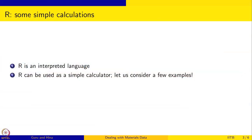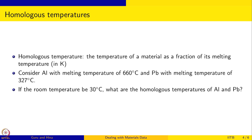R is an interpreted language, so you can use it exactly like a calculator — you type in some computation and you will immediately get the answer. Here are a couple of examples. Homologous temperature is a concept: it is the temperature of a material as a fraction of its melting temperature in Kelvin. So if you know the melting temperature of a material in Kelvin and any temperature of interest, you can find what homologous temperature that corresponds to.